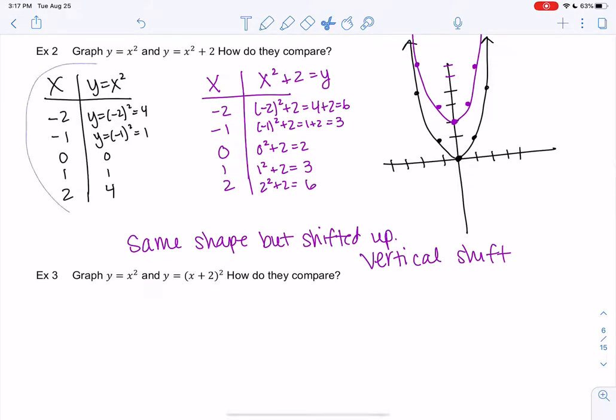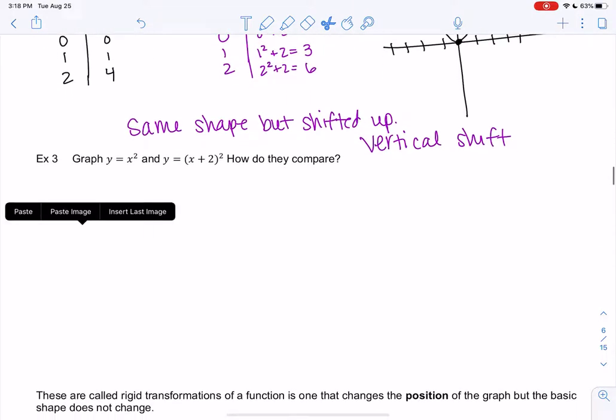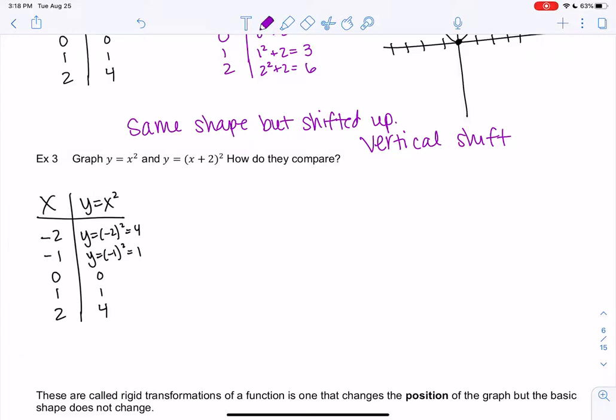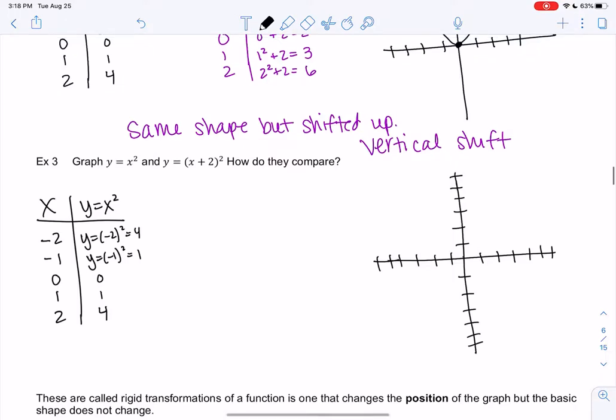Alright, so let's do y equals x squared again. So I'm just going to copy the table since we just did this one. So go ahead and graph that one again, and then we'll look at a different graph and see how it shifts. So if you need time to graph y equals x squared, pause the video. Otherwise, I'm going to graph it really fast since we just did it. 1, 2, 3, 4, right, y equals x squared.